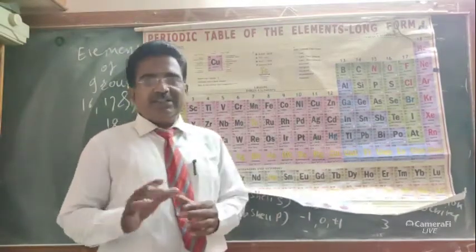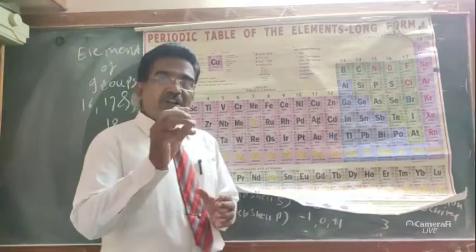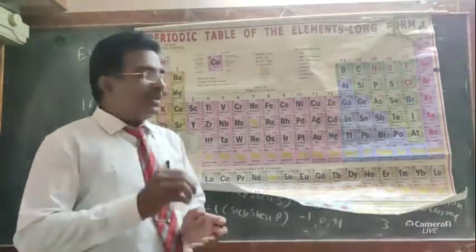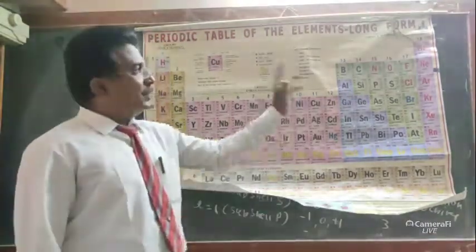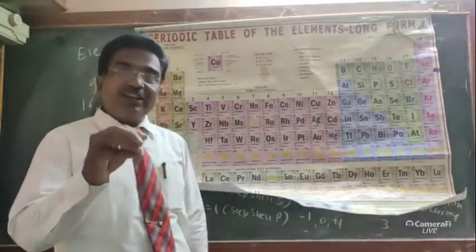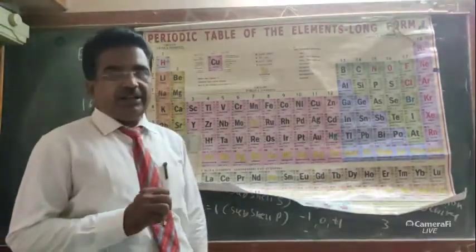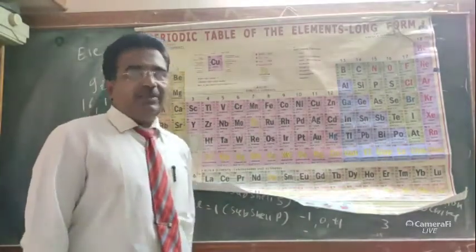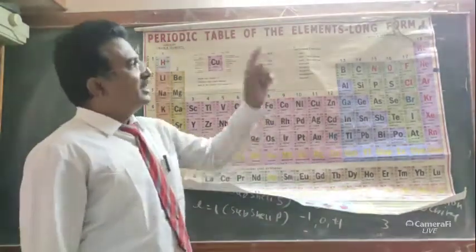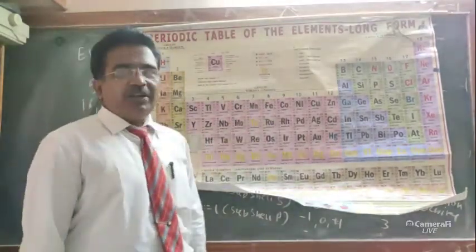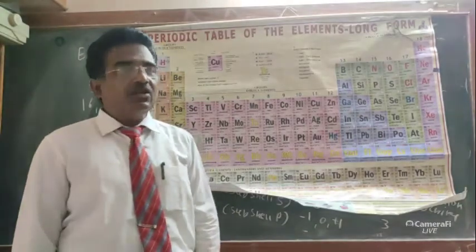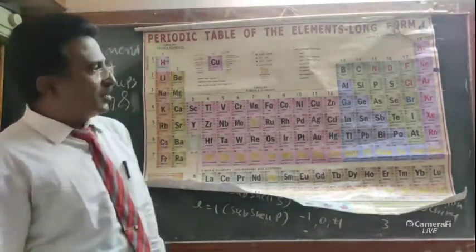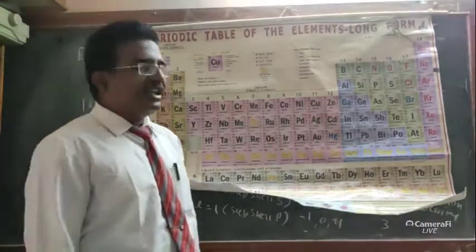The group 17 elements are highly electronegative, with chlorine being one of the most electronegative elements. The group 18 elements are helium, neon, argon, krypton, xenon, and radon.